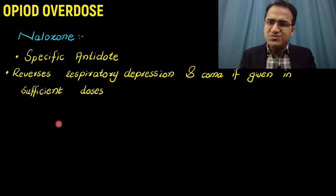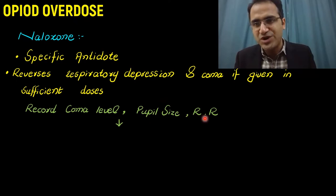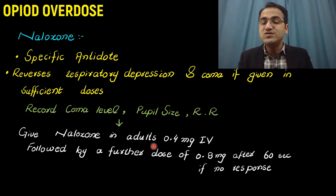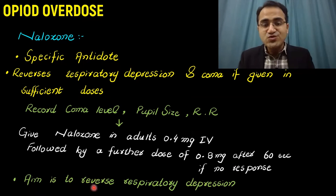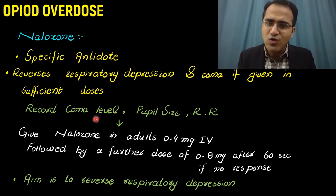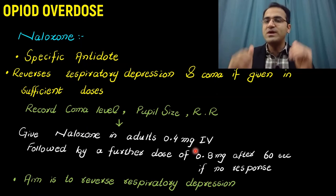Naloxone must be used when respiratory depression is imminent. Record the GCS score, pupil size, and respiratory rate before administration. In adults, give 0.4 mg IV, followed by a further dose of 0.8 mg after 60 seconds if there is no response. The aim is to reverse respiratory depression. Recheck GCS, coma level, pupil size, and respiratory rate and compare with pre-naloxone readings to assess improvement.